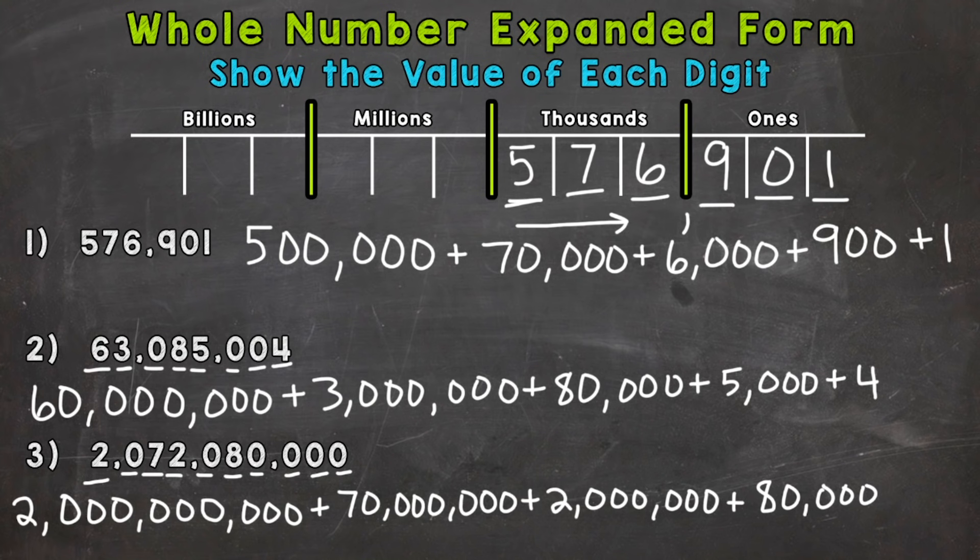So there you have it — that's how you put whole numbers into expanded form, showing the value of each digit. There is another way to express numbers in expanded form that involves using parentheses. I have a separate video that goes through how to do that — I'll drop that link down in the description.